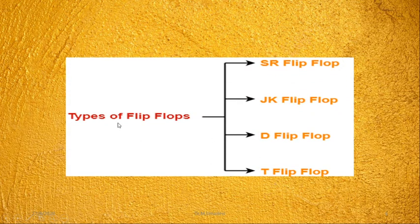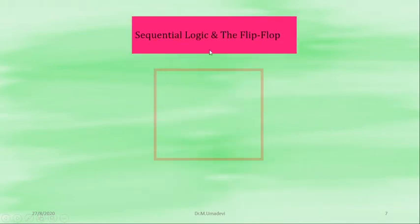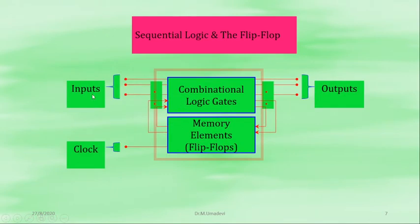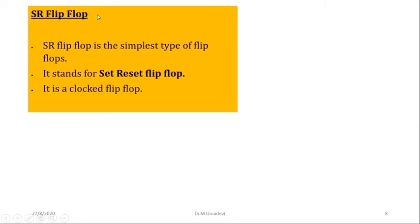Let us move to the types of flip-flops. There are four types: SR flip-flop, JK flip-flop, D flip-flop and T flip-flop. We will see them one by one. First I will discuss sequential logic and the flip-flop. Sequential logic consists of combinational logic gates along with input, output and memory elements — the memory elements are flip-flops, and the flip-flop is active only when we apply the clock.